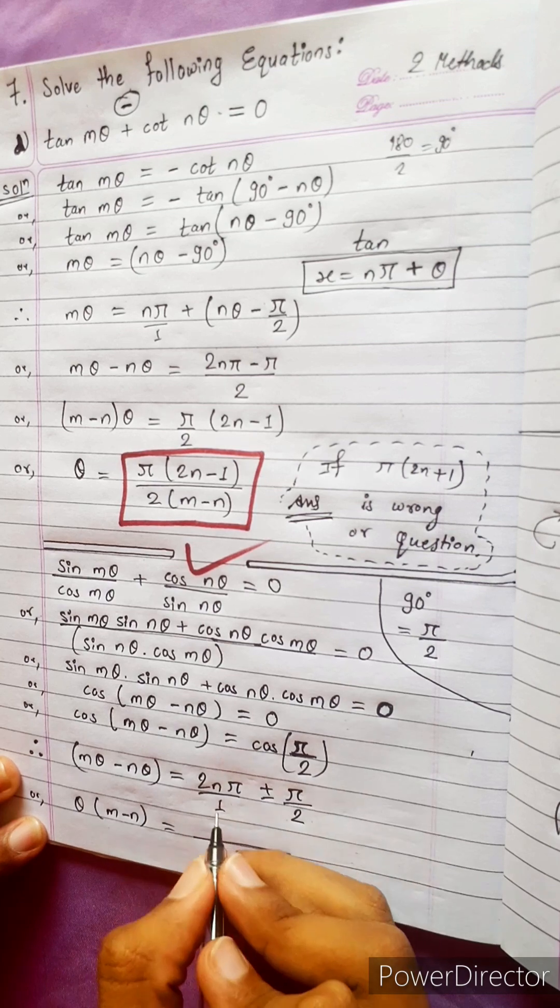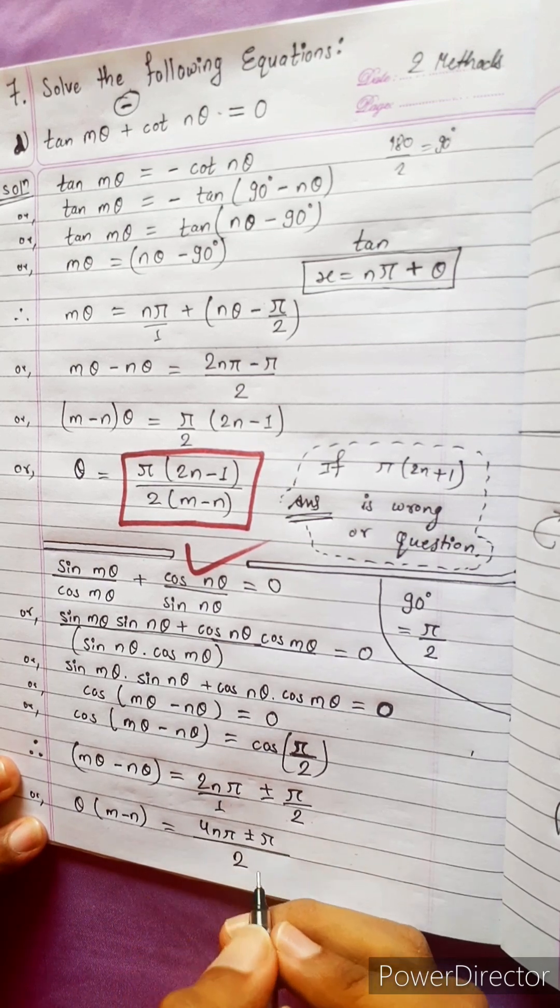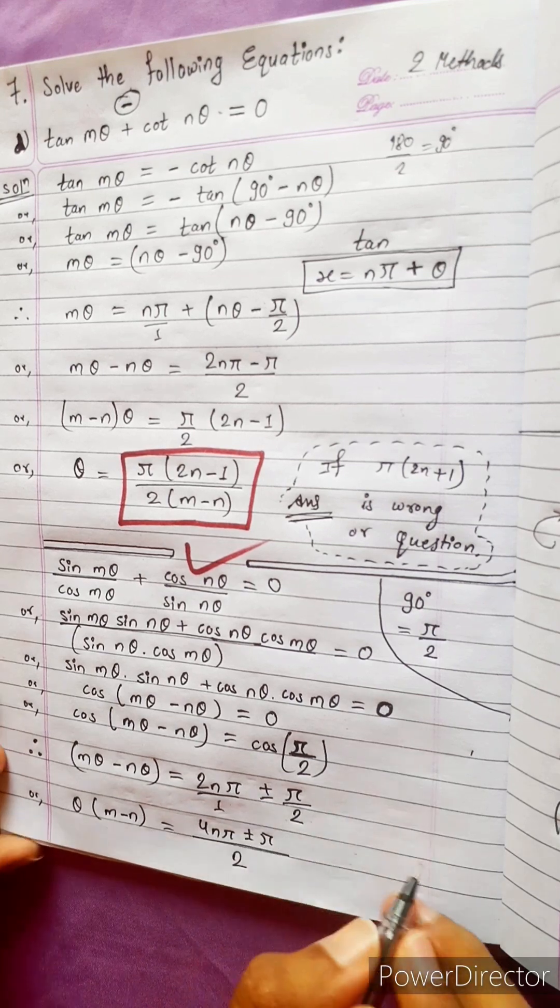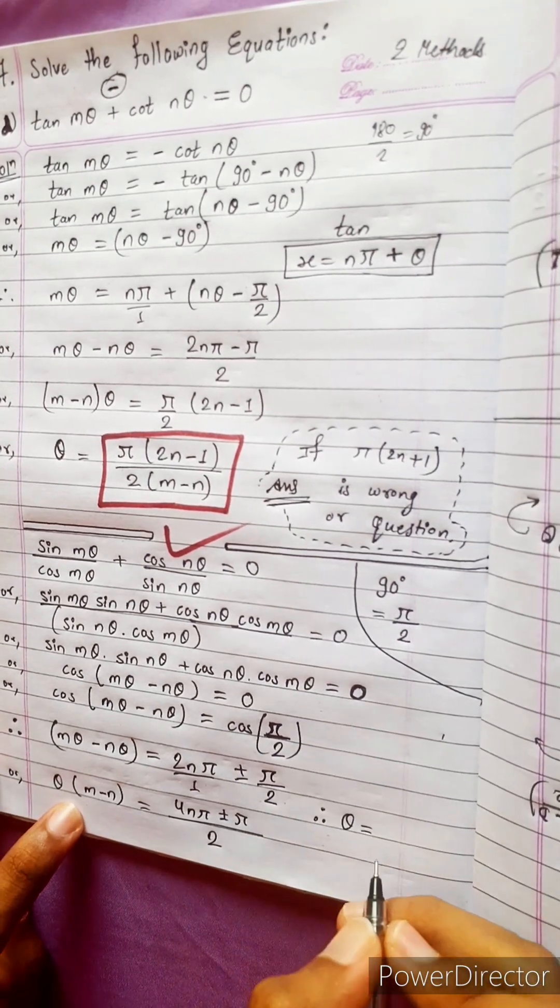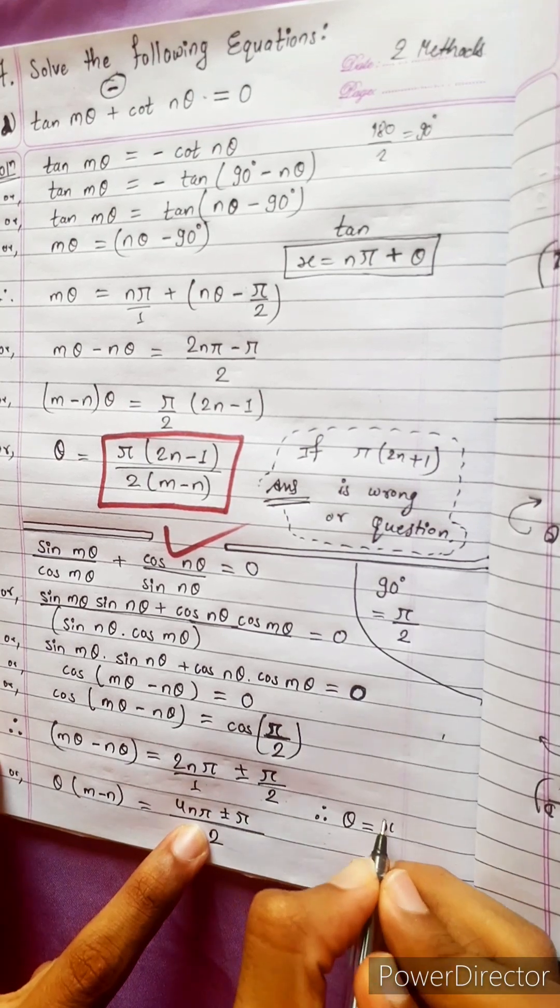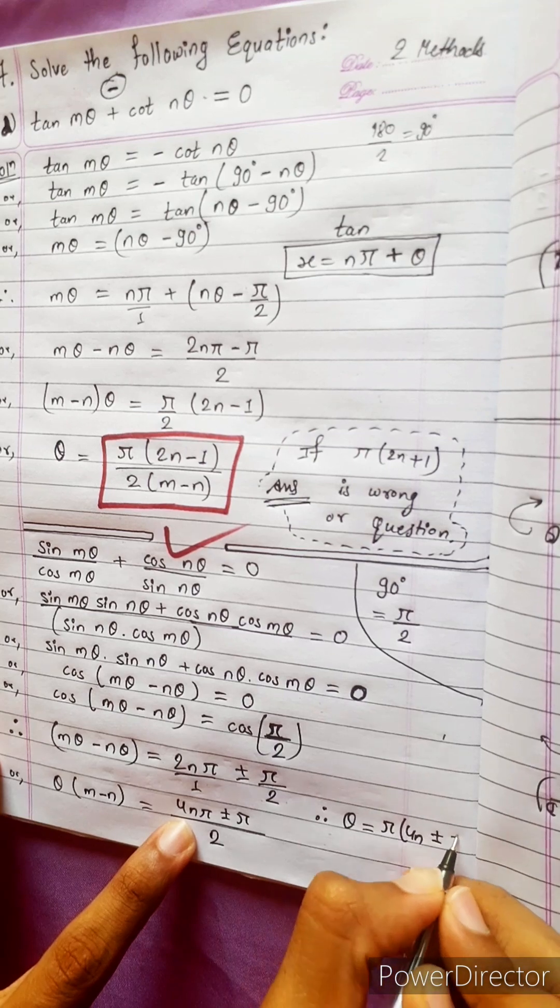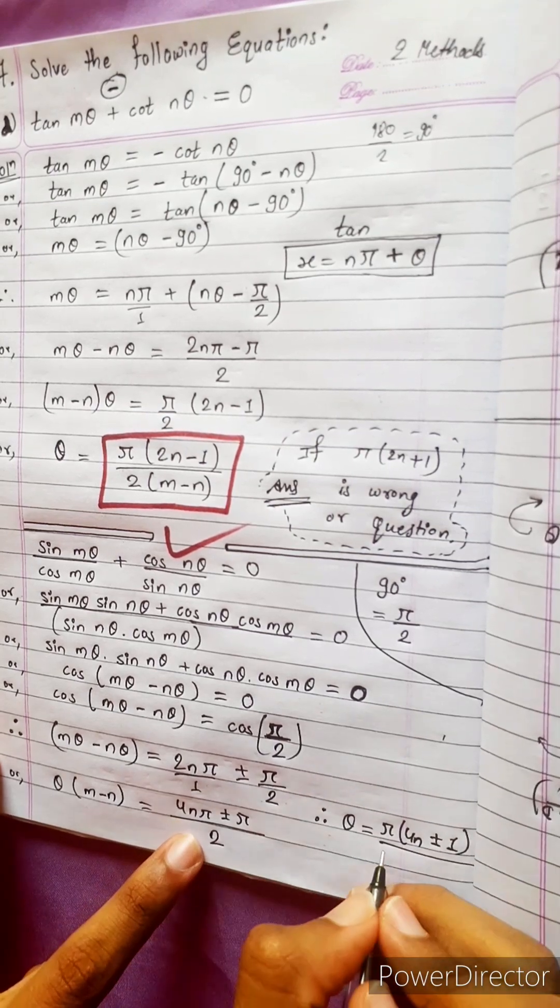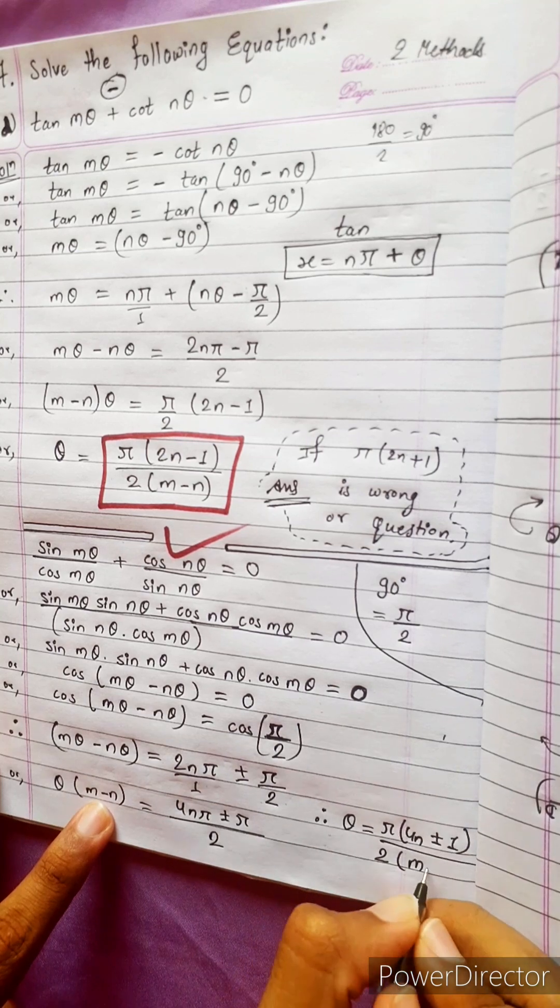Then this will be 2n, then this will be LCM 2, 4n pi plus minus pi. Up to this we have done. Now next step is last step. Therefore theta equals to pi take common, remaining 4n plus minus 1, divide by 2 is already here.